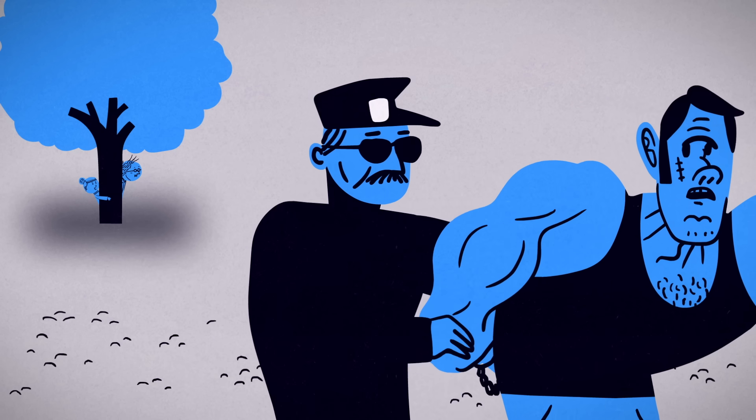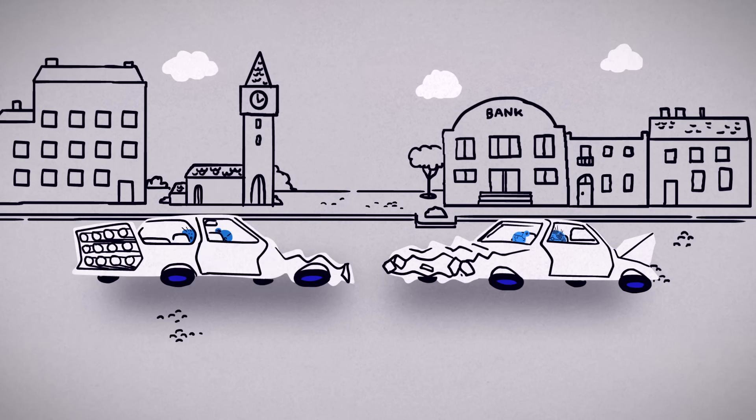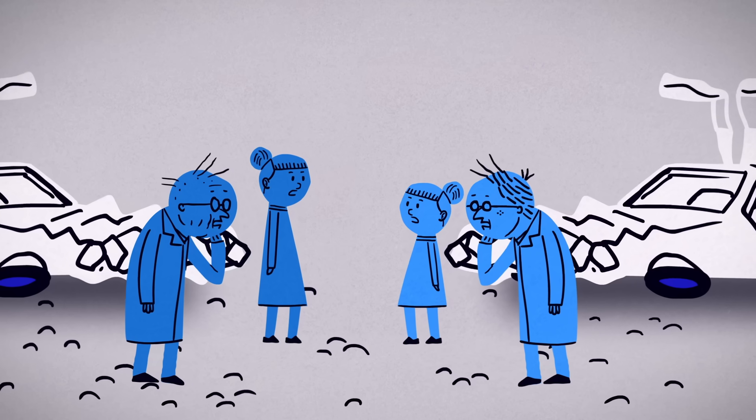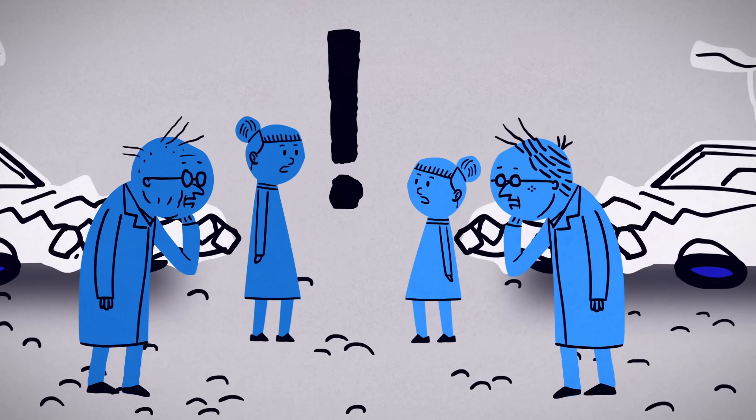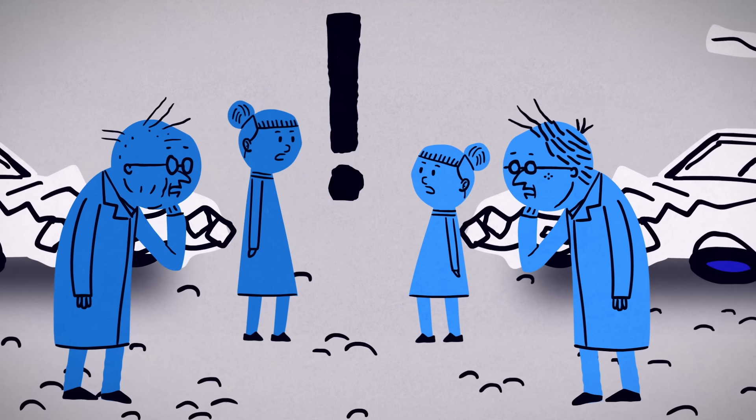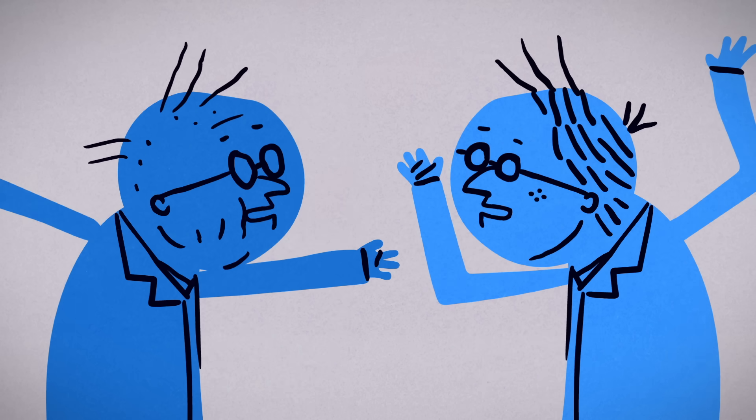But shortly after you fix your mistakes, another DeLorean appears and crashes into yours. Out step older versions of you and the Professor, who apparently had the same idea from somewhere else in the timeline. The Professors panic and explain that the universe could collapse now that you're both in the same time and place.